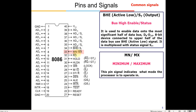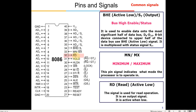The MN/MX pin determines operating mode: when it is logic 1 (5V applied), the 8086 operates in minimum mode as a standalone processor; when it is logic 0 (grounded), it operates in maximum mode. The next pin is RD (read), active low — whenever this goes low, we are reading either from memory or from an input/output device.